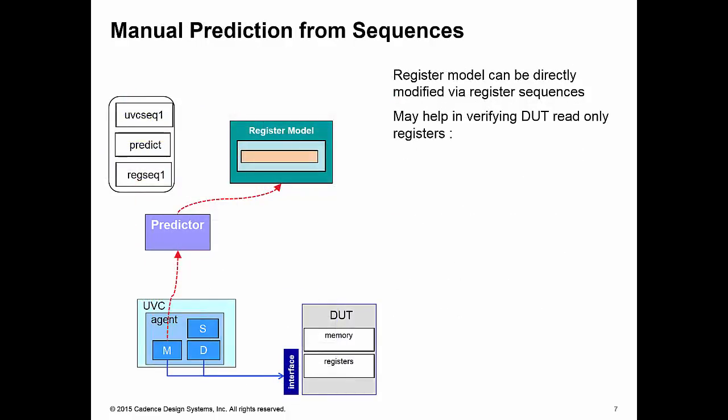Last couple of modes, we're going to have a look at manual prediction. Now there are API methods, get_mirrored_value and predict, that allow your sequences just to update the register model only without carrying out any operation on your UVC, without carrying out any operation on your DUT registers.